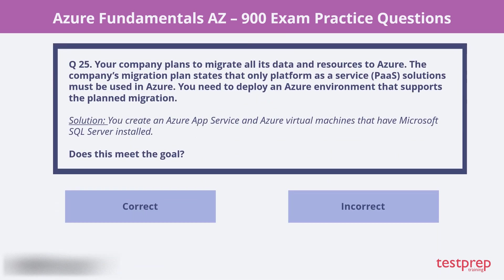Question 25. Your company plans to migrate all its data and resources to Azure. The company's migration plan states that only platform-as-a-service solutions must be used in Azure. You need to deploy an Azure environment that supports the planned migration. Solution: You create an Azure App Service and Azure Virtual Machines that have Microsoft SQL Server installed. Does this meet the goal? No, it would not.